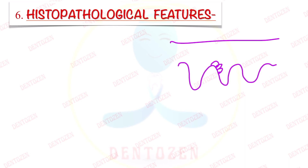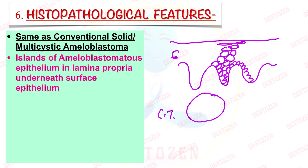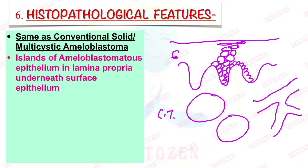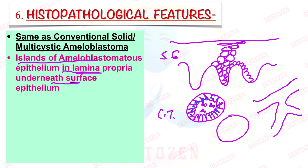Now talking about histopathological features. Since it is a peripheral tumor, we will see the overlying gingival epithelium, that is stratified squamous epithelium, with basal cells and spinous cell layer. Below that in the connective tissue of the gingiva, we can see islands of odontogenic epithelium, or it may be present in the form of long interconnected strands. If present as islands, we will see peripheral tall columnar ameloblast-like cells with hyperchromatic nuclei, reverse polarity of nuclei away from the basement membrane, and palisading arrangement. The central cells will be loosely placed stellate reticulum-like cells, resembling the follicular pattern of solid ameloblastoma.